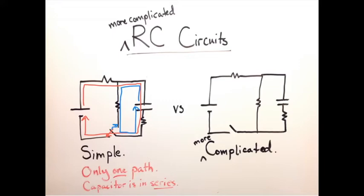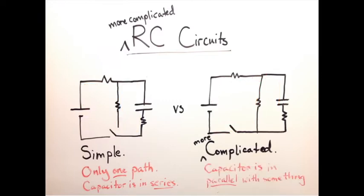However, in the circuit on the right, when this switch is closed, current will flow like, uh-oh, there's a junction, and the current will split. So that really is the main difference here, is the fact that the capacitor is in parallel with something.